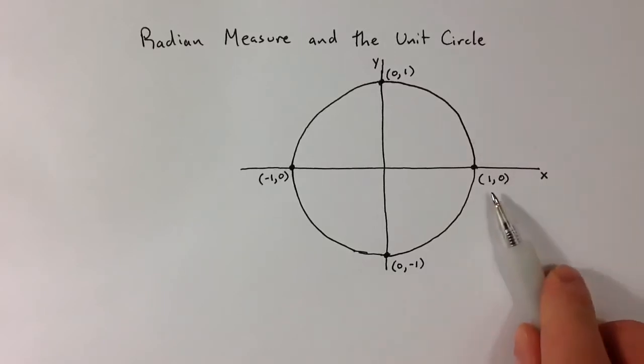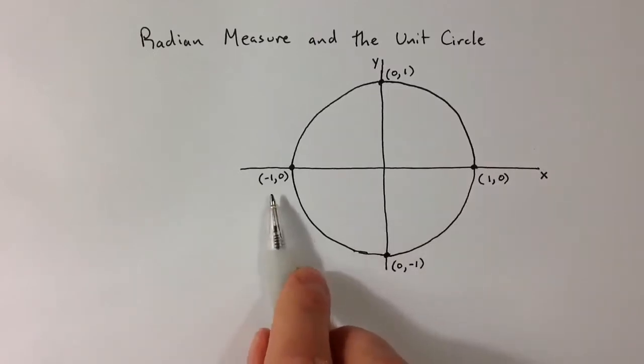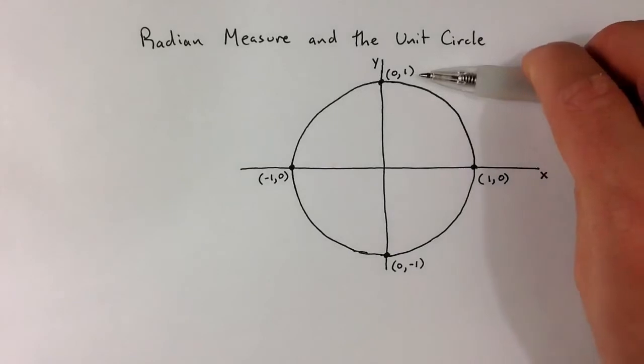It passes through the x and y axes at points that have nice x and y coordinates. It passes through the positive x-axis at (1,0), the negative x-axis at (-1,0), the negative y-axis at (0,-1), and the positive y-axis at (0,1).